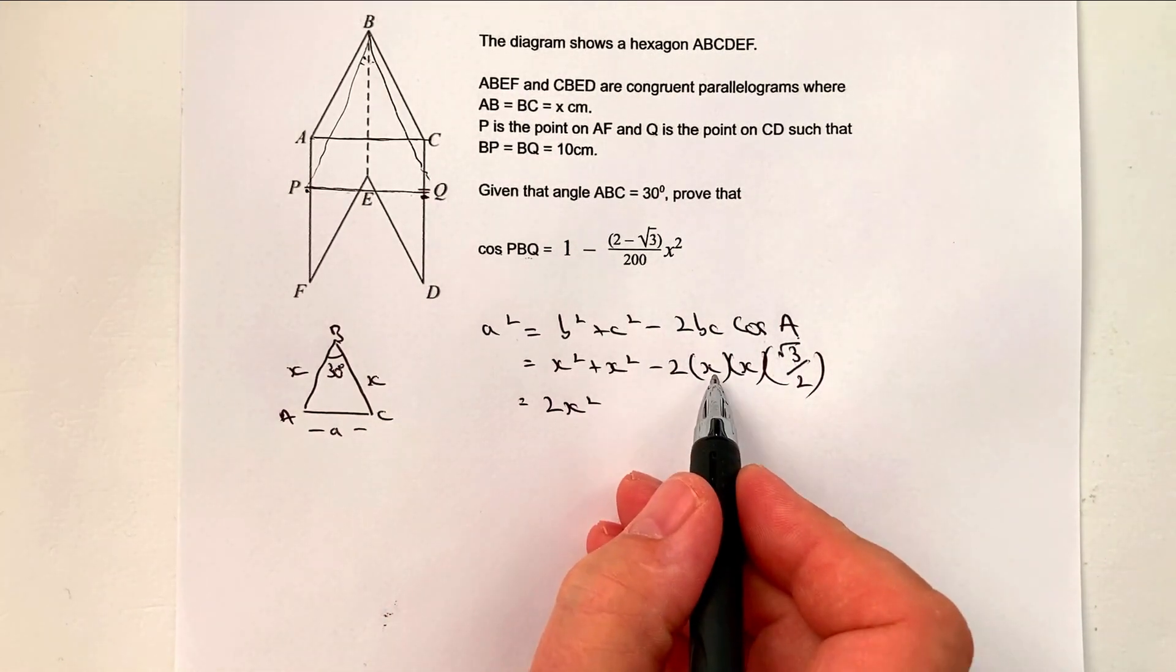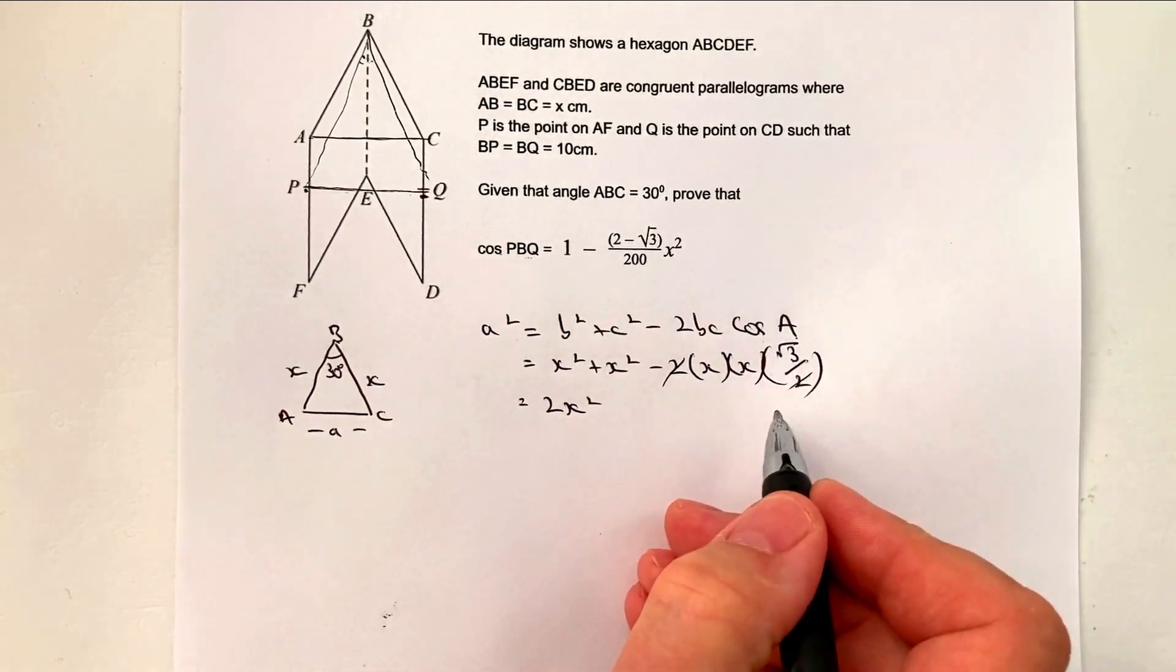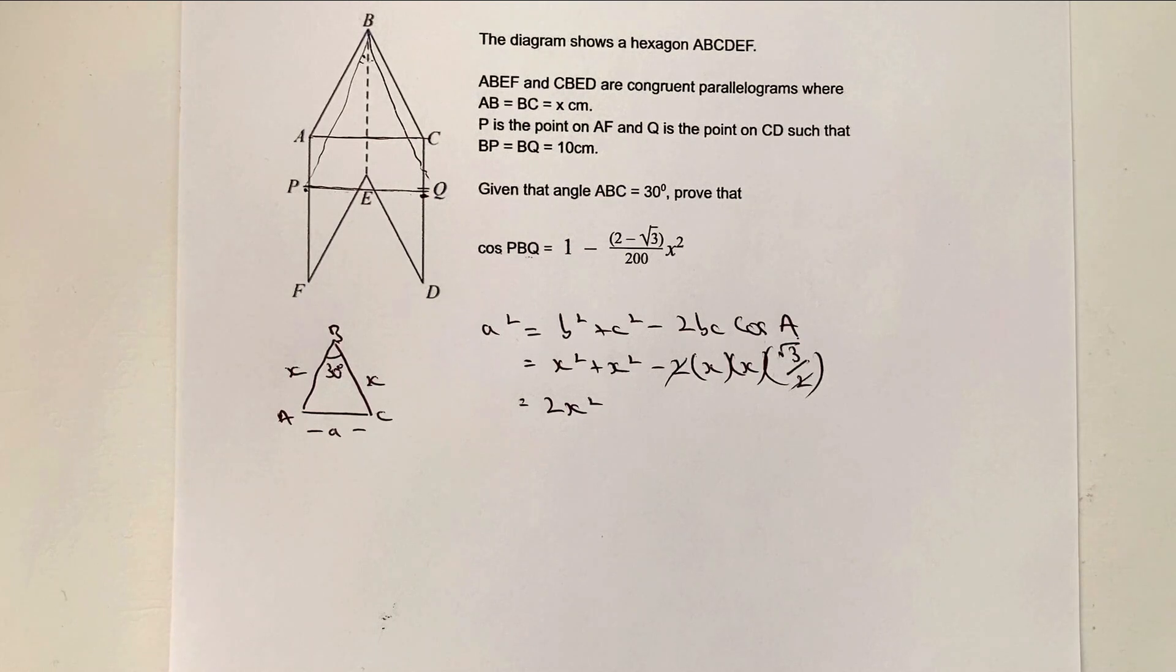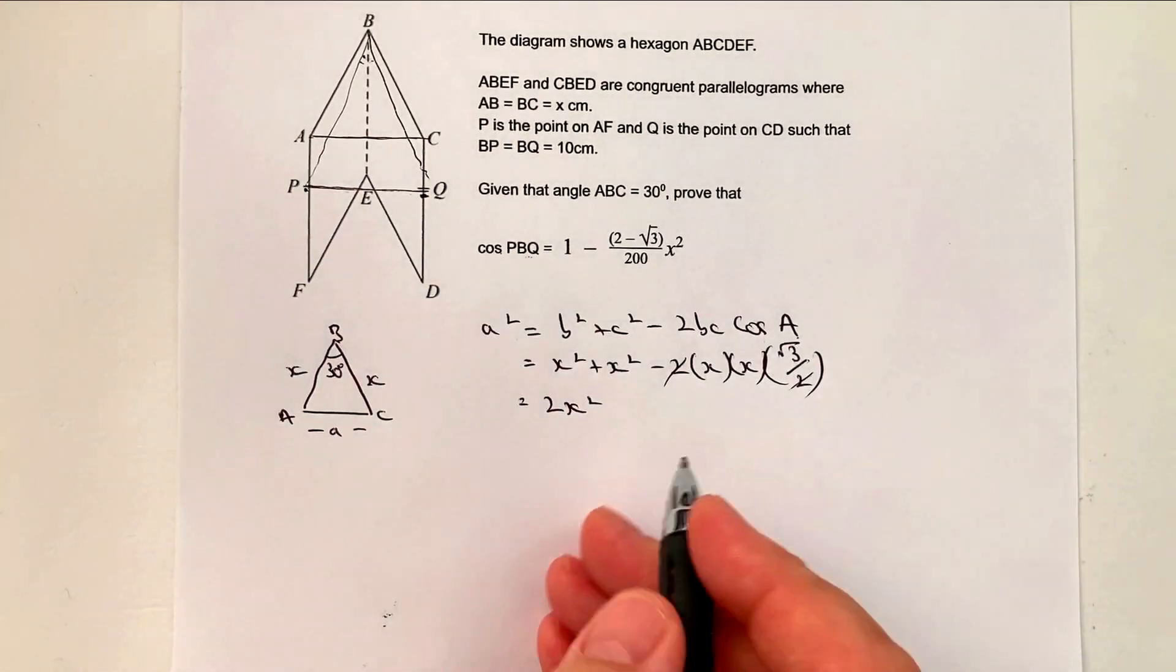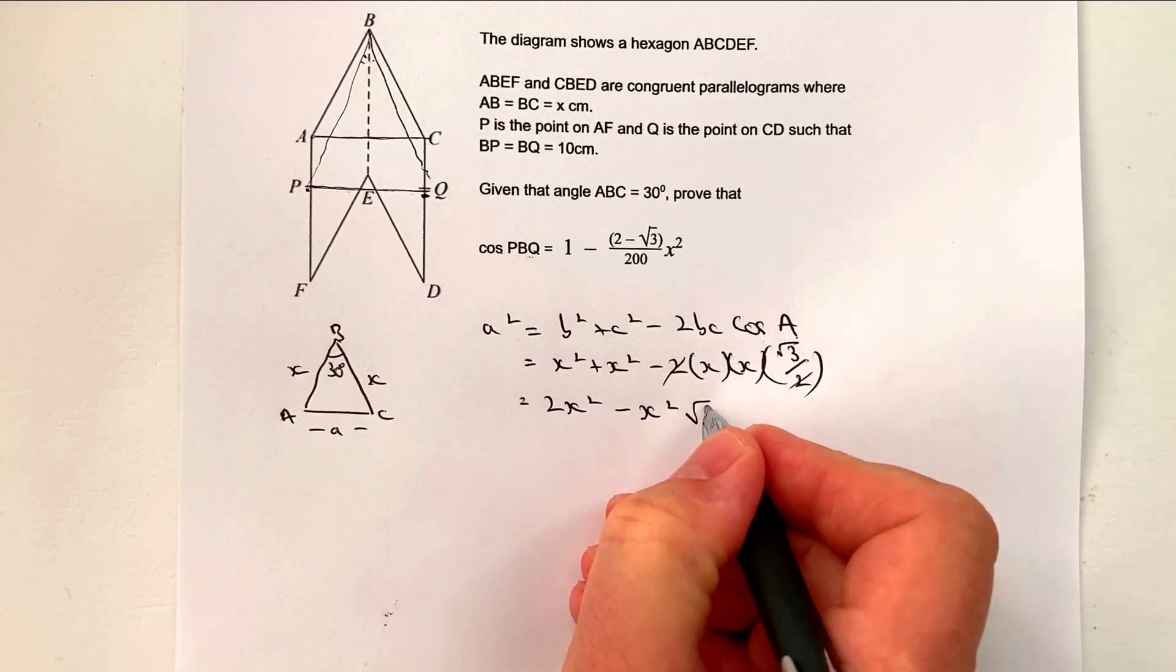And then I've got minus two x times x times root three over two. So actually, I can lose these two twos. Okay, I can just divide through top and bottom by two, and that means I can lose them. So I can write this as minus x squared root three.